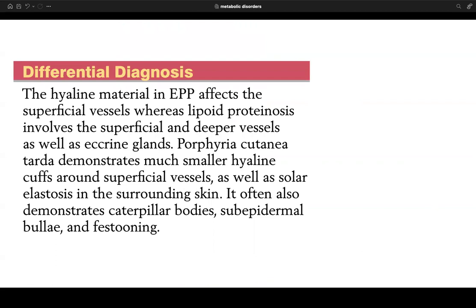Differentiating EPP, lipoid proteinosis, and porphyria cutanea tarda: EPP affects only superficial vessels; lipoid proteinosis involves superficial and deeper vessels as well as eccrine glands (much deeper and more extensive). PCT shows much smaller hyaline cuffs around superficial vessels plus solar elastosis; classic PCT findings include caterpillar bodies, subepidermal bulla, and festooning. These subtle distinctions are important for exam differentiation.